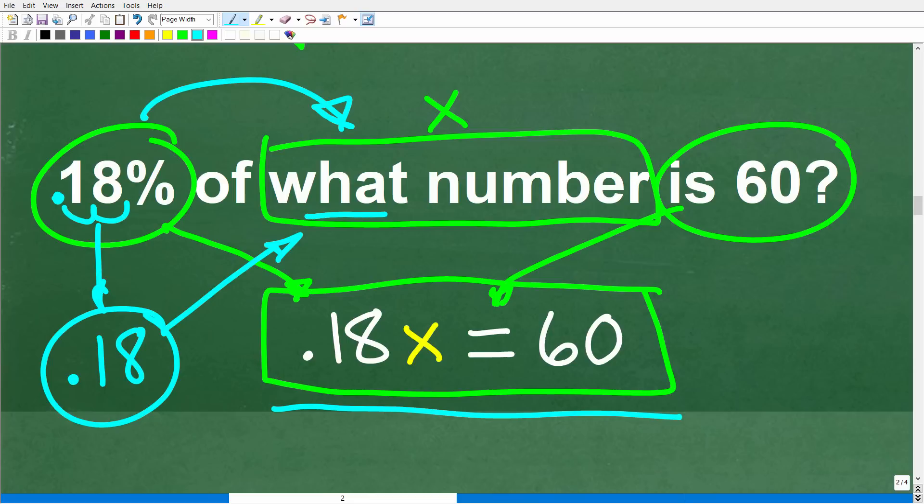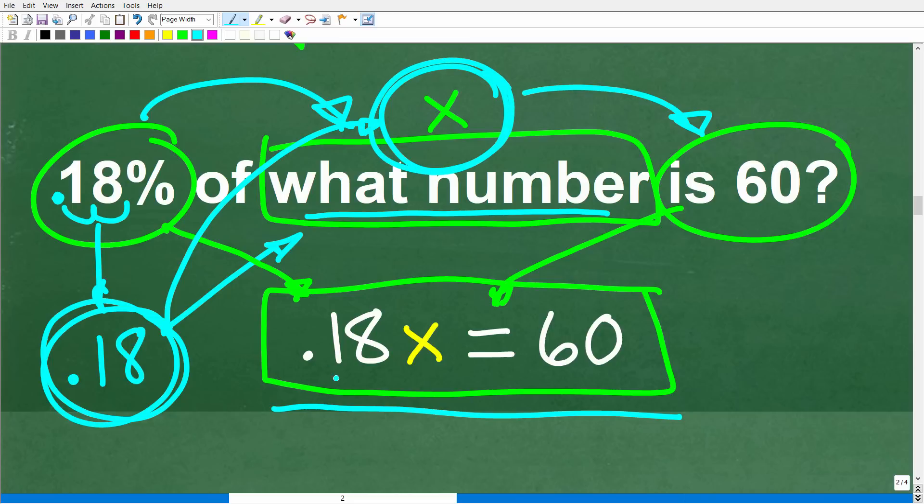So 18% of some number. Now, again, we don't know what this number is. This is the question. So we're using this variable x to represent this number. But 0.18 times this number is going to be equal to 60. We know the answer. Now, in algebra, to take a number and multiply it by a variable, all we have to do is write the number in front of the variable. So 0.18 times x is the same thing as 0.18x. And this is equal to 60.